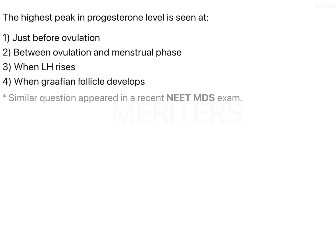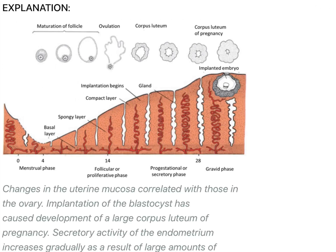If we try to understand the whole uterine cycle or the endometrial cycle as well as the ovarian cycle of the female, we can read this with the help of this particular figure. From day 1 of menstruation to day 5, it is known as the menstrual phase — so from day 1 to day 5 you have the menstrual phase.